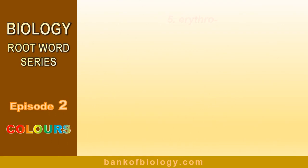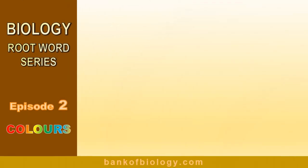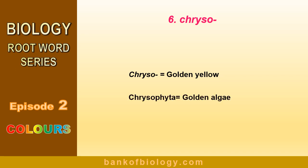Number 5: erythro. In the last episode, we already familiarized ourselves with this root word. Its meaning is red. No further explanation is needed. Number 6: chryso. Chryso means golden yellow. For example, chrysophyta means golden algae.